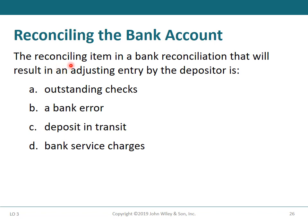Question — reconciling the bank account: which reconciling item in a bank reconciliation will result in an adjusting entry by the depositor? Options: (a) outstanding checks, (b) bank error, (c) deposit in transit, (d) bank service charges.